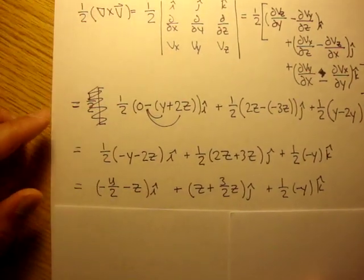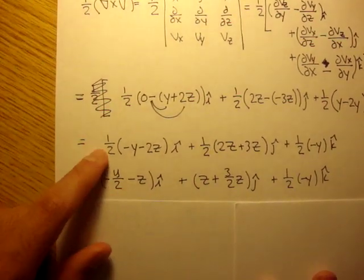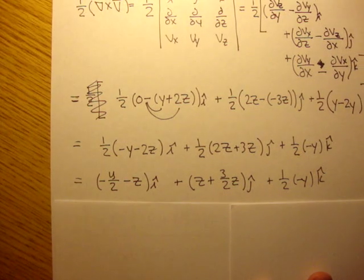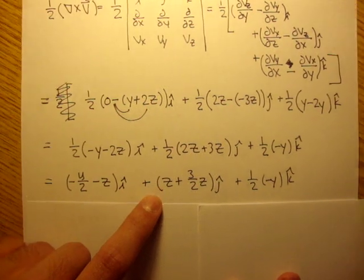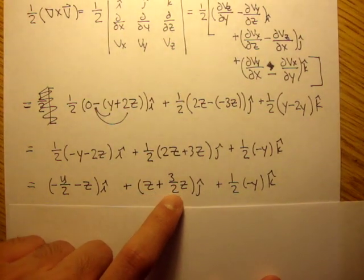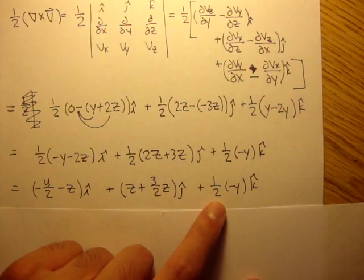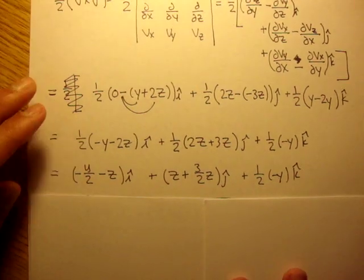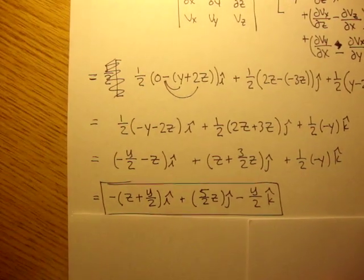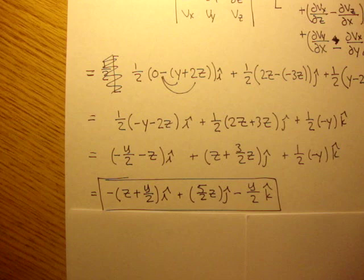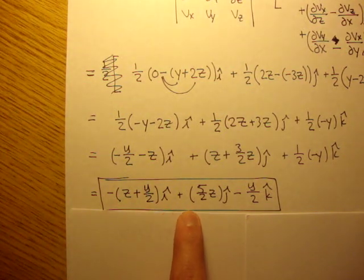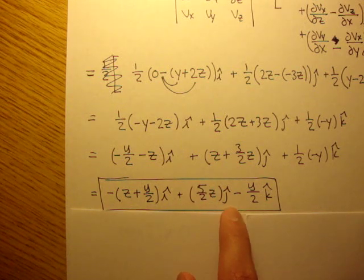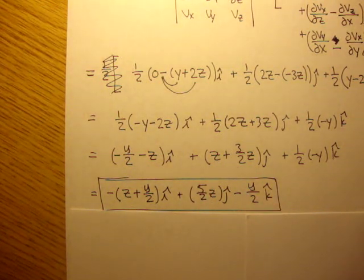And if we solve that out some more, if we distribute all the 1 halves in, we get negative y over 2 minus z in the i plus z plus 3 half z in the j plus 1 half negative y in the k. And in the end, when we combine everything together, we get negative quantity z plus y over 2 in the i plus 5 half z in the j minus y over 2 in the k.